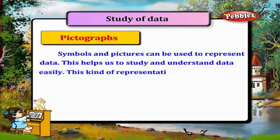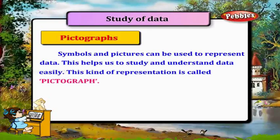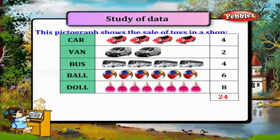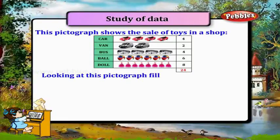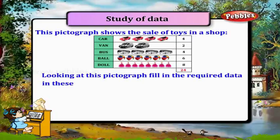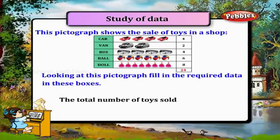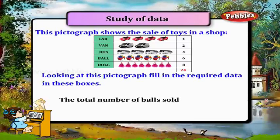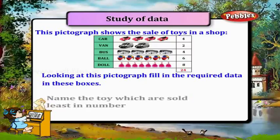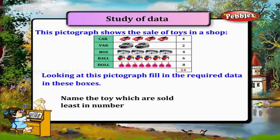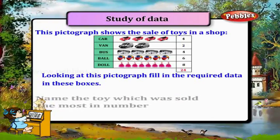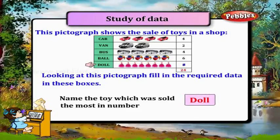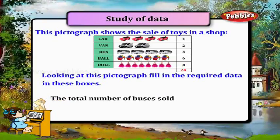This kind of representation is called a pictograph. This pictograph shows the sale of toys in a shop. Fill in the required data in these boxes. The total number of toys sold? 24. The total number of balls sold? 6. Name the toy sold the least in number: Van. Name the toy sold the most: Doll. The total number of buses sold? 4.